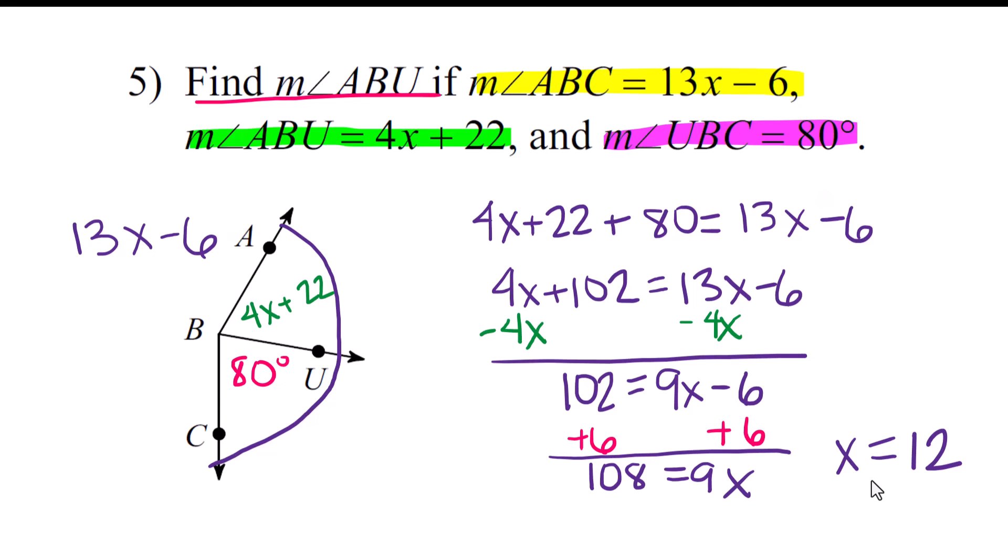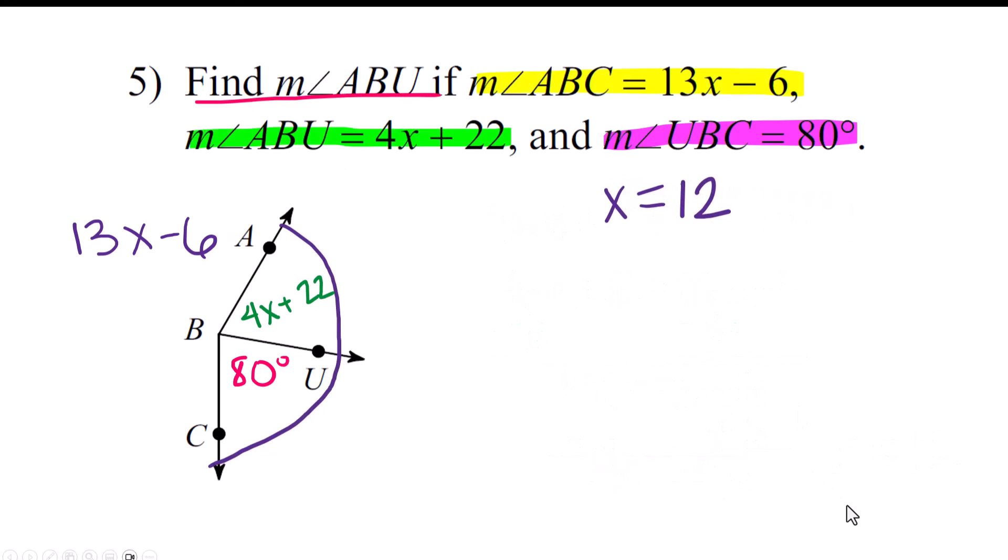Now, one of the most common dumb mistakes you'll make in geometry is you're going to feel like you're done right here when they really want you to plug it in. So make some room. We have to take this x equals 12, and we need to plug it in to 4x plus 22. Easy math, easy math. Answer is 70 degrees. All right, here comes one like this with different numbers for you to try.